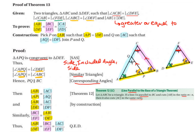Angle APQ equals angle ABC, because they are similar triangles. This smaller triangle APQ is inside the larger triangle CAB, so therefore they are similar — the angles are all the same but the lengths are different. Hence, PQ is parallel to BC because of corresponding angles. If AB is taken as a transversal cutting through the two lines, equal corresponding angles imply that QP must be parallel to CB.